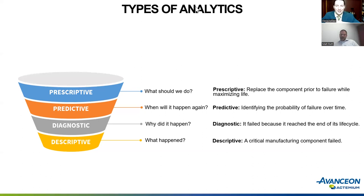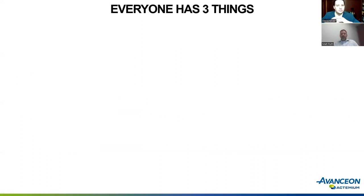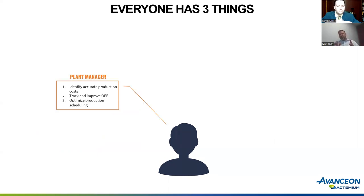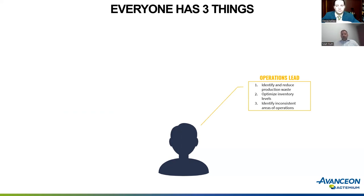Now the next big question: how does data analytics work in operations technology specifically? Data analytics in OT is predicated on everyone having three sets of responsibilities. From a plant manager perspective, they're looking to identify accurate production costs, track OEE, or optimize scheduling. From an operational lead perspective, they're curious about driving production waste reduction, digging into inventory levels, and identifying inconsistent operations.